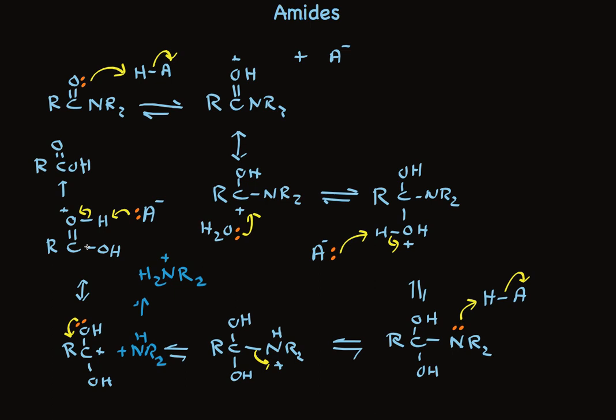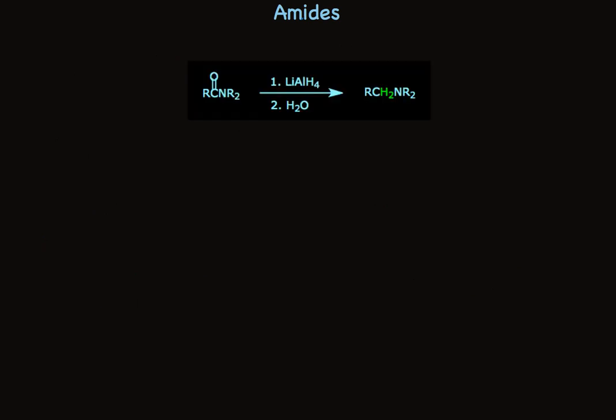Of the two methods for hydrolysis of amides, basic hydrolysis and acid hydrolysis, acid hydrolysis is generally preferred. So let me tell you about one more reaction of amides, like acid halides and anhydrides, carboxylic acids and esters. Amides are reduced by lithium aluminum hydride. You add water in a second step. The product is an amine. This turns out to be a reasonably effective way to prepare amines.